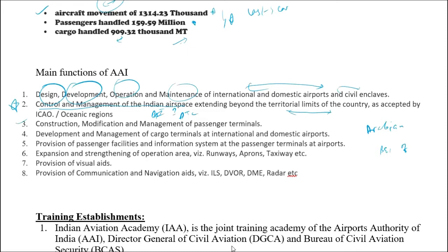AAI handles construction, modification, and management of passenger terminals, as well as development and management of cargo terminals at airports. A related organization, AI-CLAS, now handles the entire cargo operations of AAI. AAI also provides passenger facilities and information systems, and takes care of expansion and strengthening of operational areas such as aprons and runways.